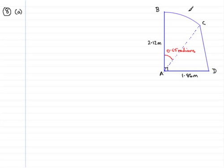Welcome to question number 8. In this question we are given a diagram that shows the cross-section ABCD of a small shed. AB is a vertical line of length 2.12 metres and AD is a horizontal line of length 1.86 metres. CD is also a straight line and BC is an arc of a circle centre A. We are also told that angle BAC is an angle of 0.65 radians.